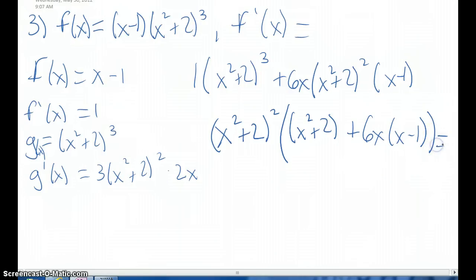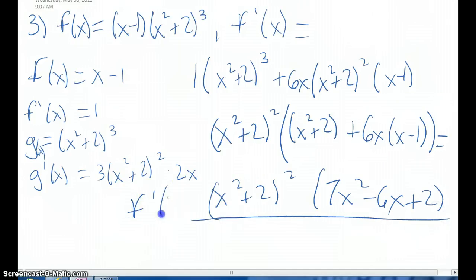And then when we multiply that out, we get x squared plus 2 squared times 6x times x minus 1 plus x squared plus 2, which gives us 7x squared minus 6x plus 2 for f prime of x. Which means the answer is d.